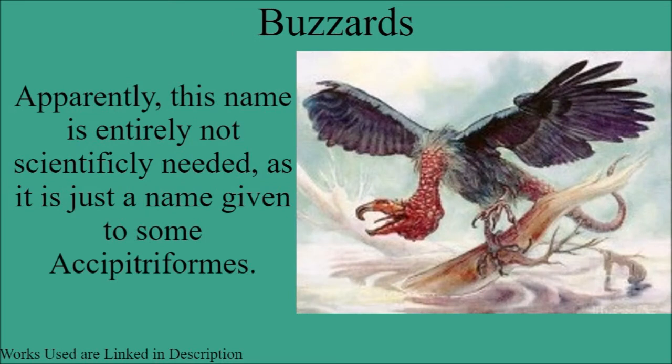First up for the accipitriformes are the buzzards. Apparently this name isn't entirely scientifically needed, as it's just a name given to some accipitriformes — it's kind of just what people call them, and doesn't really have much merit in terms of being a specific thing. It also doesn't help that the Magic the Gathering art of a buzzard is not exactly scientifically accurate, because I think it was from the Mirari time and things were a bit weird. Apparently buzzards are just not an entirely scientifically needed name, and this will be a theme throughout the accipitriformes.